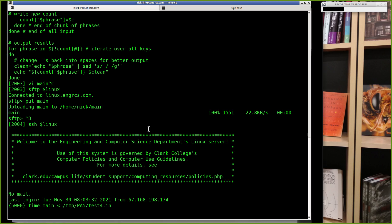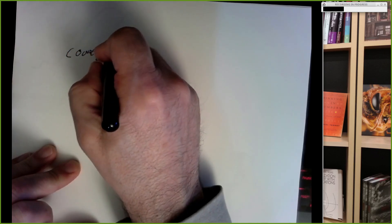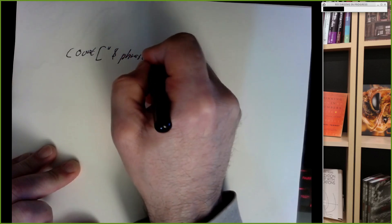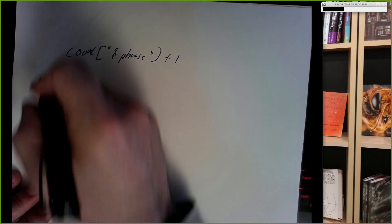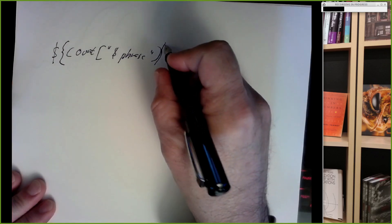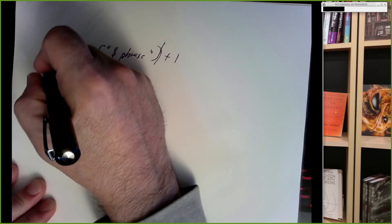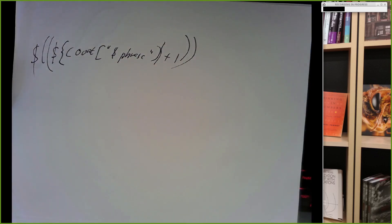Someone asked in chat: can you do count["$phrase"]=$((${count["$phrase"]}+1)) in one statement? You can, but you have to get the syntax exactly right with all the curly brackets and dollar-sign parens. If there's a typo, good luck finding it. That's the main reason to break it into separate steps — but yes, you can do it in one line.